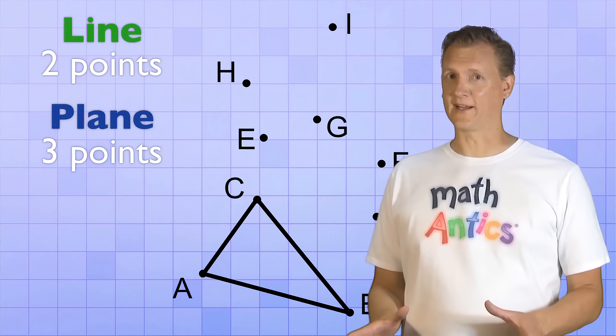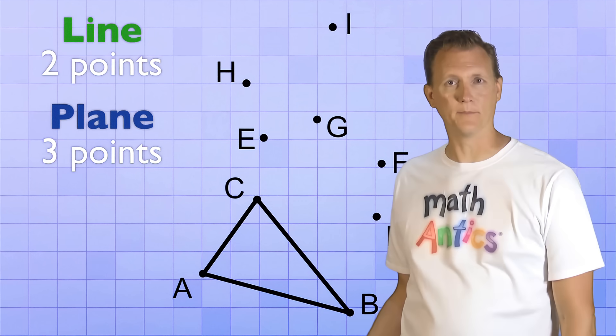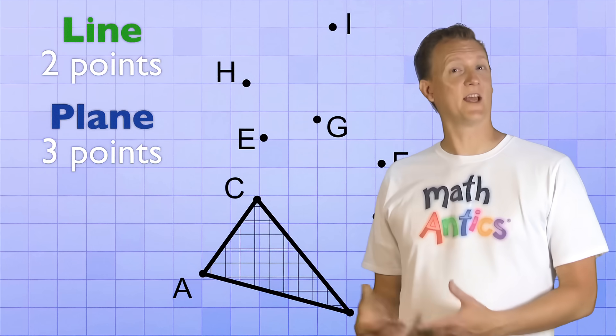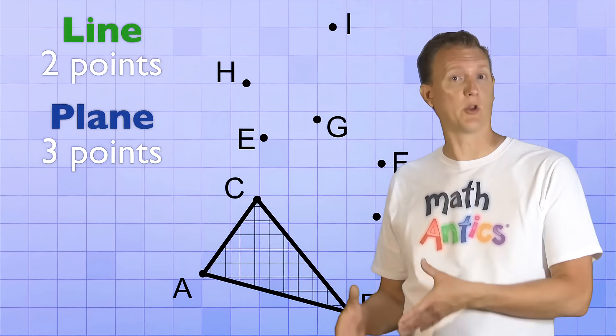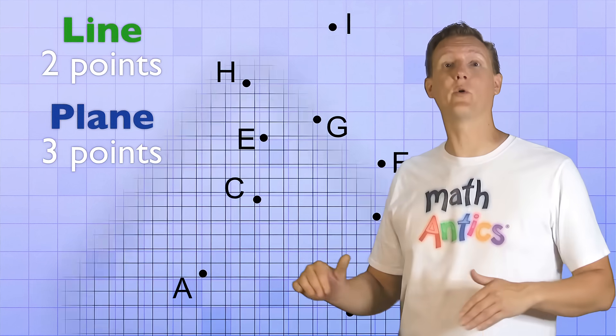Now you're probably thinking, wait, I thought we were supposed to get a plane, not a triangle. Well, because it is a flat surface, a triangle is a lot like a plane. But it has three edges. It stops and doesn't keep on going forever. When we were talking about lines, do you remember how a line segment had endpoints, but a true line kept on going forever? Well, it's kind of the same way with triangles and planes. You can think of a triangle as a smaller part or a segment of a plane, but the plane itself keeps on going forever.